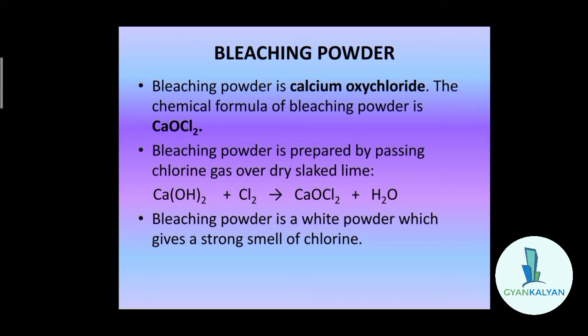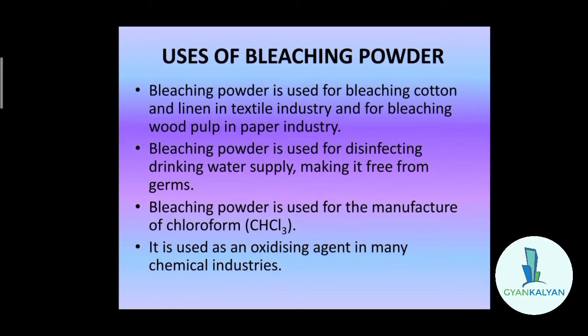You can see the chemical equation: Ca(OH)2, which is calcium hydroxide, reacts with chlorine to form CaOCl2, that is calcium oxychloride or bleaching powder. Bleaching powder is a white powder which gives a strong smell of chlorine. The real bleaching agent present in bleaching powder is chlorine, and the bleaching action of chlorine is due to its oxidizing properties.